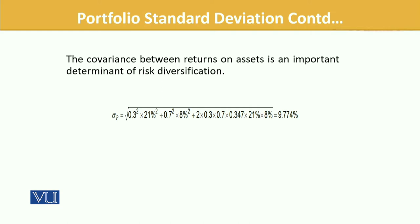Plugging into the formula, we took the weights: 0.3 squared multiplied by the standard deviation of X squared, plus 0.7 squared multiplied by the standard deviation of Y squared, and then the cross term: 2 multiplied by the correlation factor multiplied by the weights and the standard deviations. We get the portfolio standard deviation value of 9.774%.